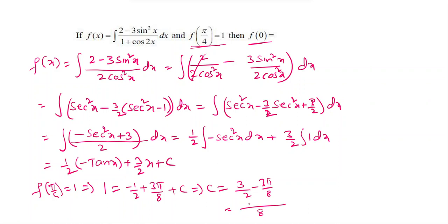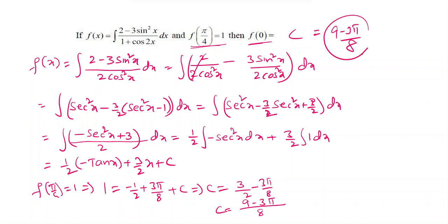Simplifying, c = (9 minus 3π) by 8. Now finding f(0): substituting x = 0, tan 0 = 0 and (3/2)(0) = 0, so f(0) equals c. Therefore f(0) = (9 minus 3π) by 8. This is the required answer.